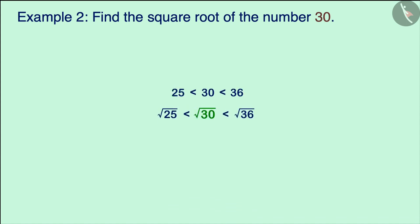We know that 30 falls between perfect square numbers 25 and 36. Therefore, the square root of 30 will be between the square root of these two numbers, i.e., between 5 and 6.